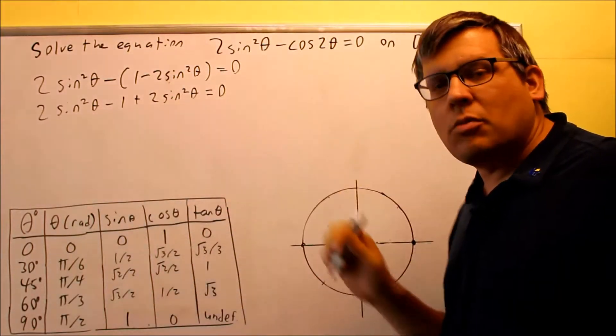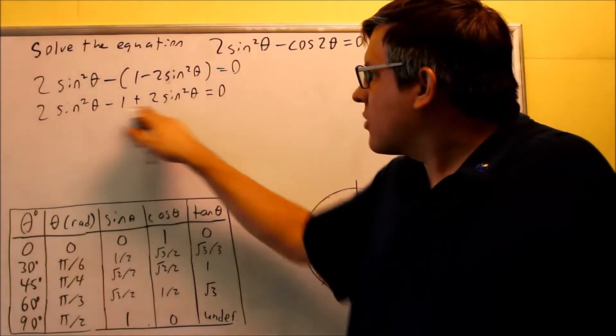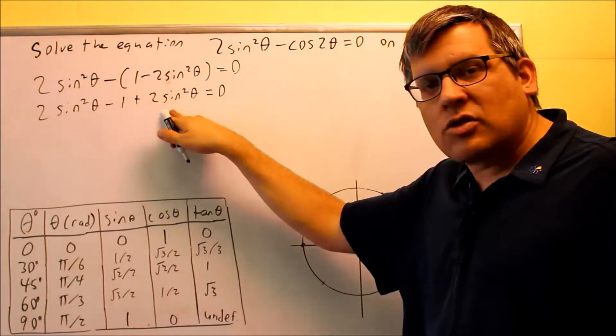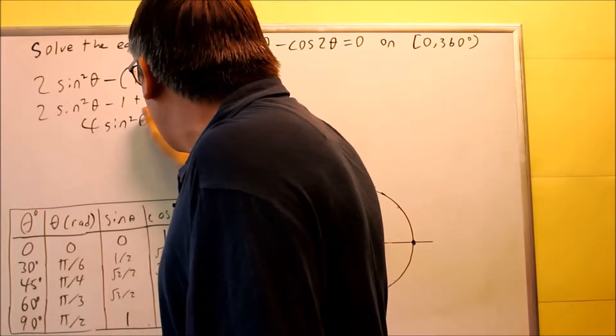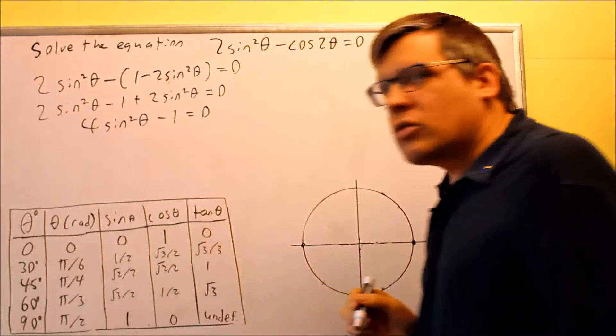Let's add like terms. 2 sine squared and 2 sine squared gives us 4 sine squared minus one equals zero.